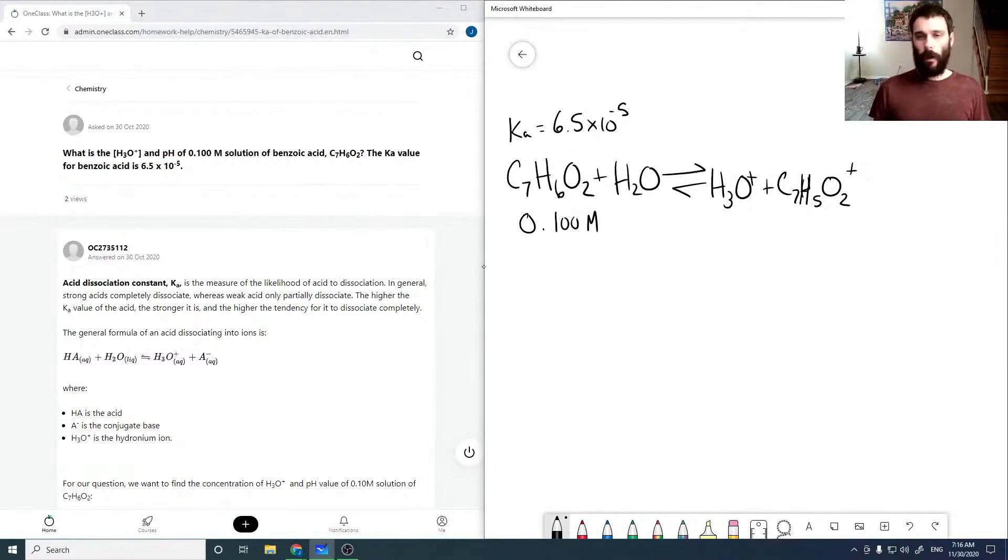Now, to find our concentrations at equilibrium, we can use our ICE table. So initially we have 0 of this and 0 of this. Water is our solvent, so we don't need to consider the concentration of that species, as it basically doesn't change.